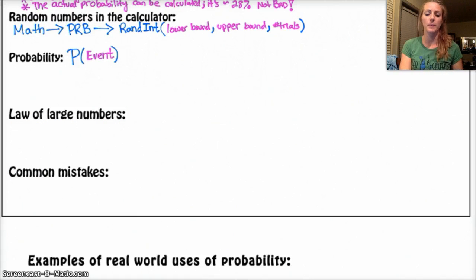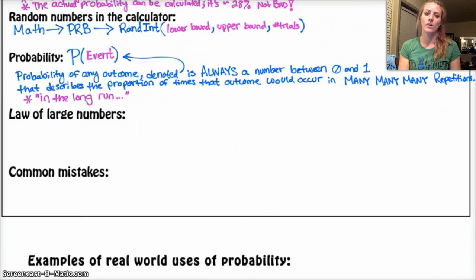Definition of probability. Probability is basically like the likelihood an event is going to happen in the long run, over essentially an infinite number of trials. It's notated like that: probability of whatever your event is equals whatever the number is. Probability of any outcome, denoted as probability of an event, is always a number between 0 and 1. So if you get a number for your probability that's not between 0 and 1, you did something wrong. You can't have like a 200% probability of something happening. It describes the proportion of times that outcome is going to occur in many, many, many repetitions, basically in infinitely many. You could also describe it as in the long run, you're going to see 1 out of 6 die rolls is going to be a 1.